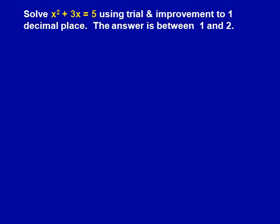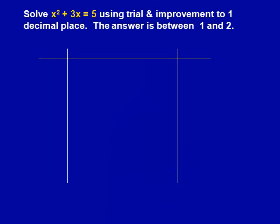You will start this question by making a table. The table has 3 columns. The middle one is for the question, the end one is for too big or too small, and the first one is for x.